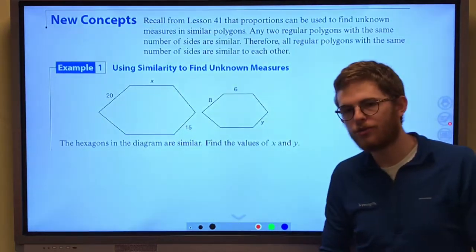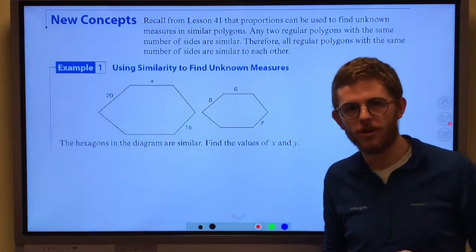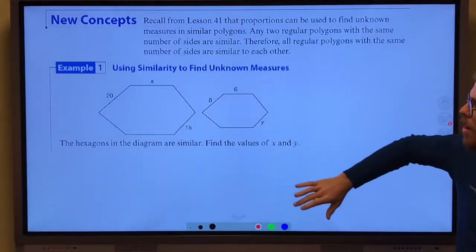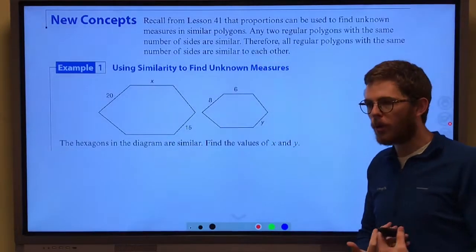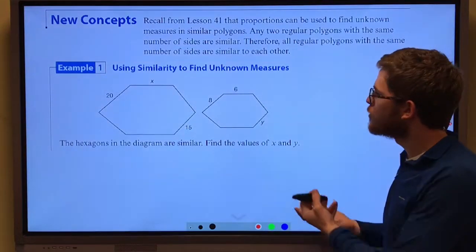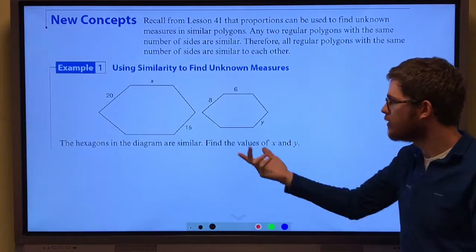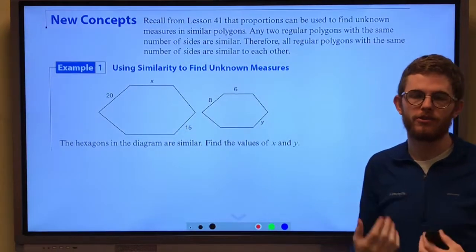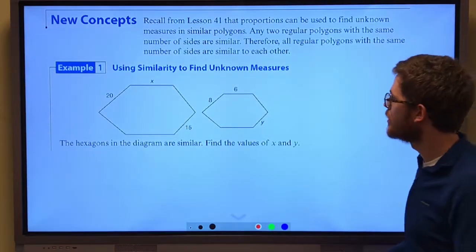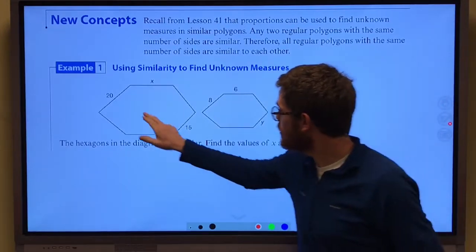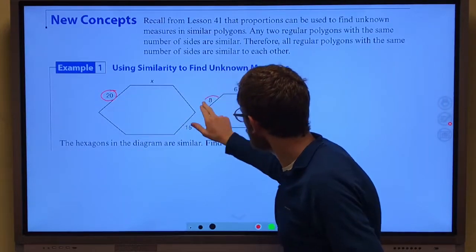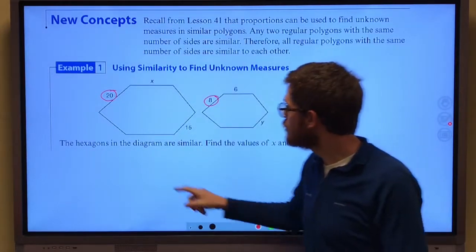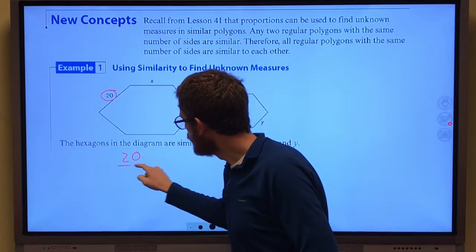All right, today our goal is to apply some of those ideas of similarity that we had mentioned in the previous lessons. First of all, remember if two figures are similar, it tells us here these hexagons are similar, we know that we can compare their size. Their sides are going to be proportional to one another. So I see I have this really good pair of corresponding side lengths. Twenty goes with eight.